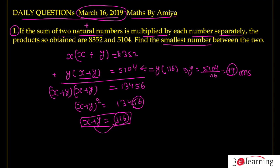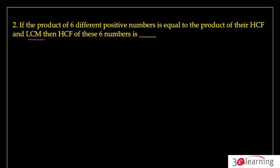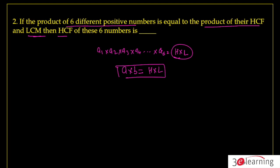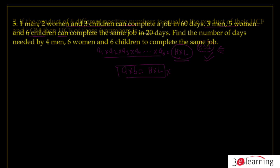Question number two is about HCF and LCM. The product of six different positive numbers equals the product of their HCF and LCM. You must remember: the product of numbers equals the product of HCF and LCM always holds true, but when you have more than two numbers, the HCF must be one. So the answer to question two is one.